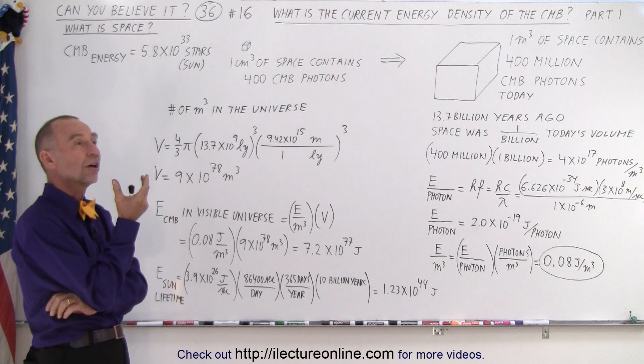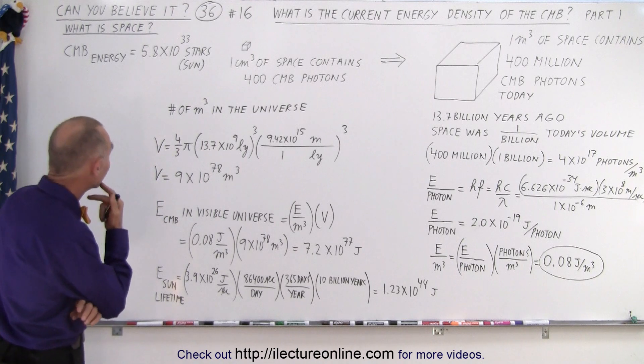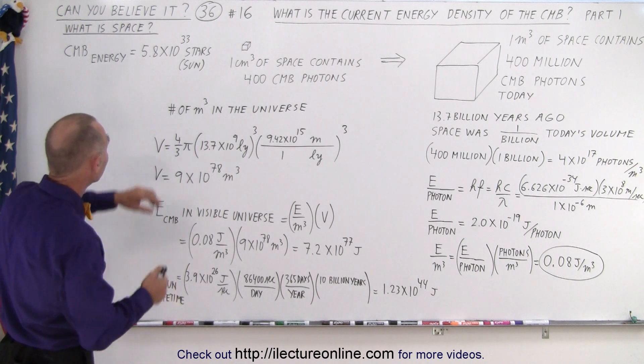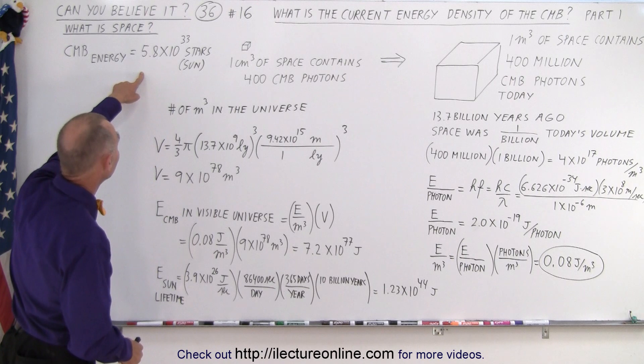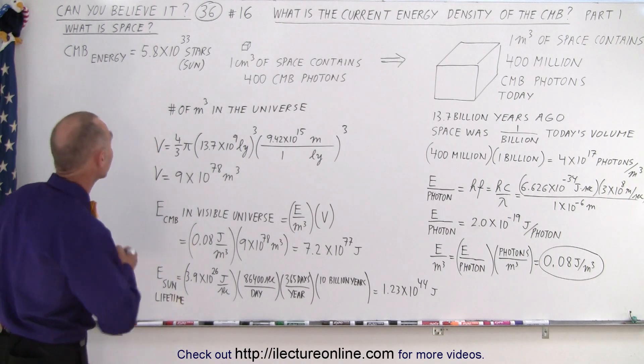And let's say there's 100 billion sun-like stars in our galaxy. If you divide that by 100 billion, you would have to divide that by 1 times 10 to the 11th, you still end up with 5.8 times 10 to the 22 galaxies.